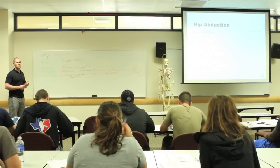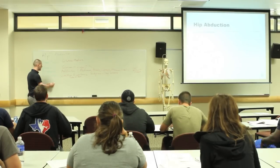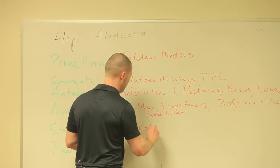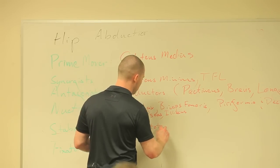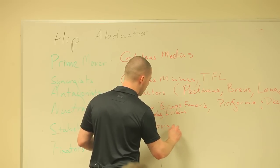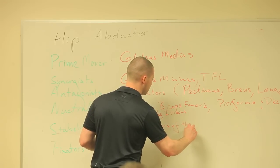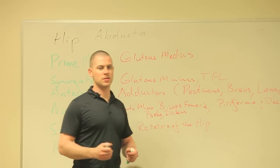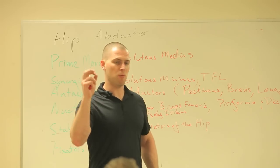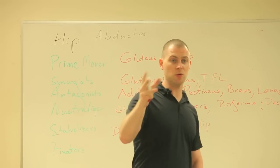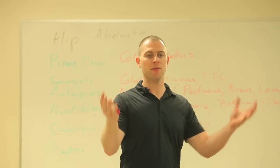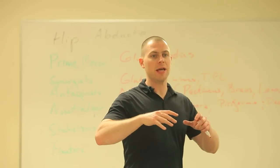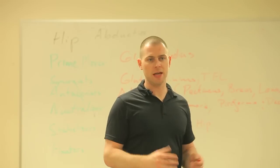Stabilizers: deep rotators of the hip. Fixators: your core, just like the last graph we did. The intrinsic stabilization subsystem is those intrinsic muscles that have more of a role in stabilization than in movement, and then all of the other muscles that cross the lumbar spine — which we could look at as global movers or global stabilizers of the trunk.